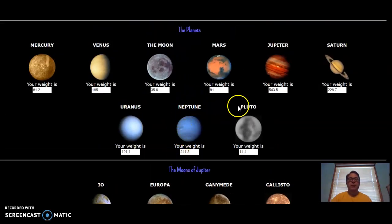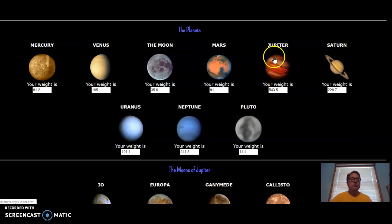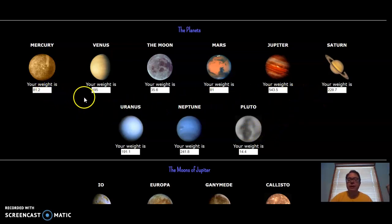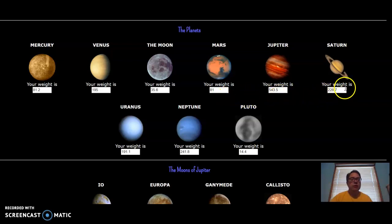So think about this: where does Thor weigh the most? He weighs the most on Jupiter, of all the planets, and that's because Jupiter is the largest planet. It has the most mass, and therefore the most gravity force to pull him down. And when you look at which of these planets is closest to what Thor weighs on Earth — 215 pounds — here it is right here: Saturn. Saturn is the closest, about 15 pounds off.